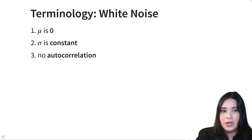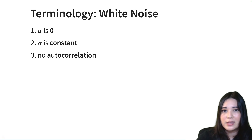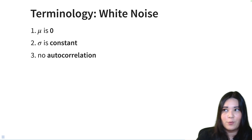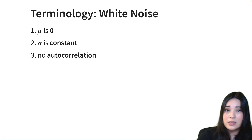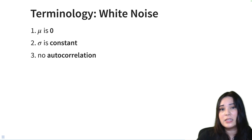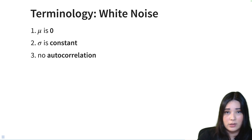Quick little terminology: white noise is another term that comes up a lot in time series. Essentially, white noise is that completely unpredictable random noise that we're not really able to model. One of the ways it's useful is we can see if we've actually accounted for all of the parts of our time series that are predictable — if all that's left over is white noise, then we probably have. White noise is a type of stationary time series where the mean is not only constant but is zero, the variance is constant, and there is no autocorrelation whatsoever.